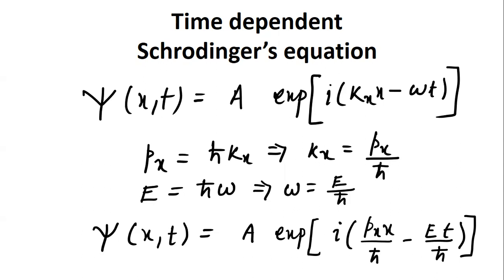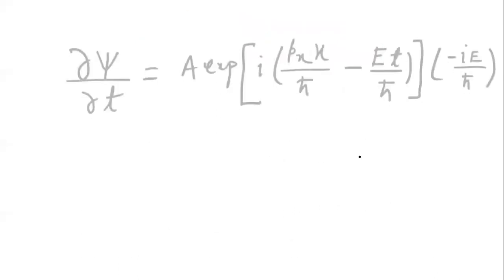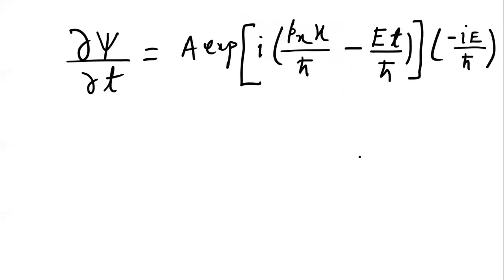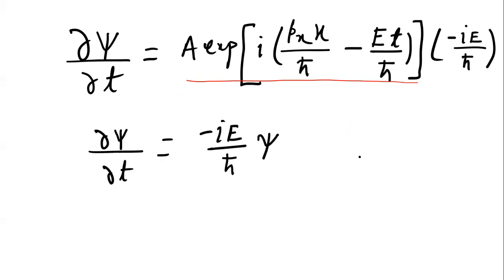Now let us take the partial differentiation of the wave function with respect to time. Taking ∂ψ/∂t of A·e^{i(p_x·x/ℏ − E·t/ℏ)}, the time part gives us −iE/ℏ. The remaining exponential term is nothing but the wave function ψ itself, so we can write ∂ψ/∂t = −iE/ℏ · ψ.